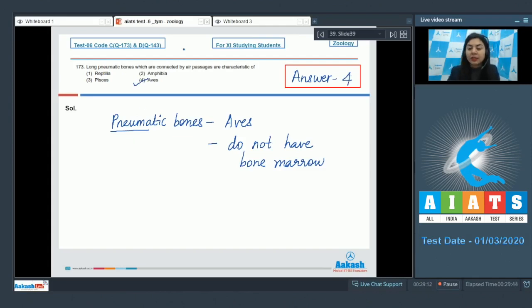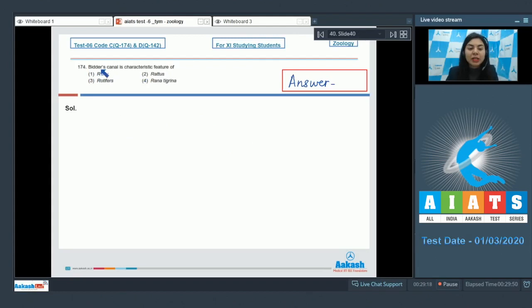Question 174: Bidder's canal is characteristic feature of Rohu, Rattus, Rotifers, or Rana tigrina? Bidder's canal is seen in frog and this canal is present inside the kidney of frog.